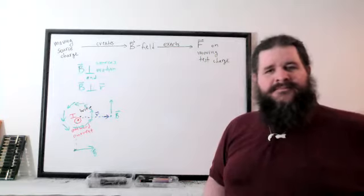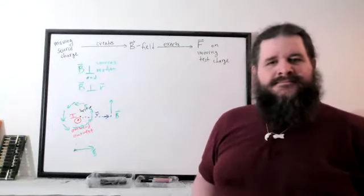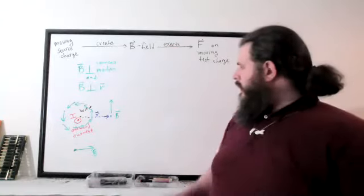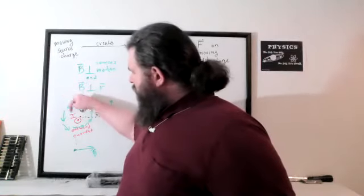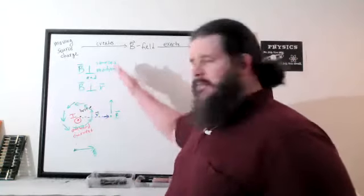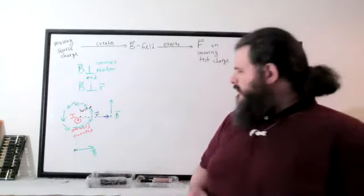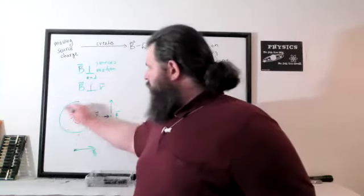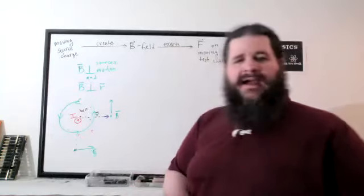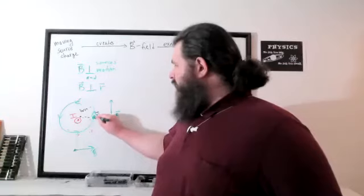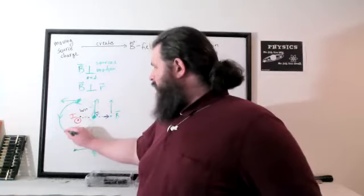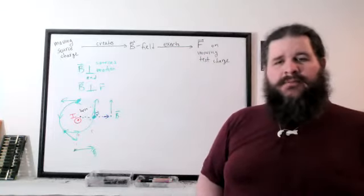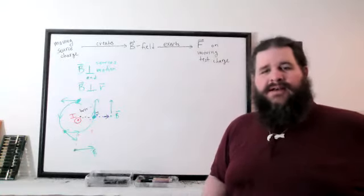A student asks how to determine the upward direction from the counterclockwise result. The answer: counterclockwise means above the wire it's to the left, to the left side it's down, under the wire it's to the right, and to the right side it's up. The magnetic field forms loops, and the actual field at any point is tangent to that loop — so straight up to the right of the wire, straight left above it, and diagonally down-right below and to the left.